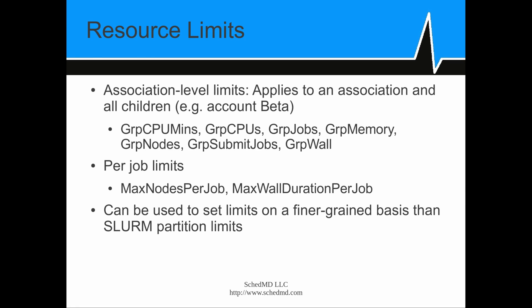The resource limits are available on a per-job or per-association level. The association-level limits apply to an association and all of its children — all of its users. For example, GrpSubmitJobs means that for that account, all of its subaccounts and all of its users can't have more than that number of jobs submitted at any given time. There are also a variety of per-job limits, time limits, and size limits, available on a per-association level. So you can have different time limits on a per-job basis for different users and different partitions, as well as the limits you define in SLURM for the partition as a whole.